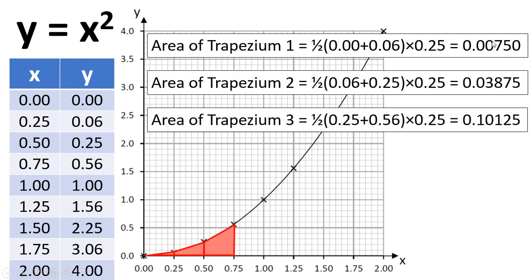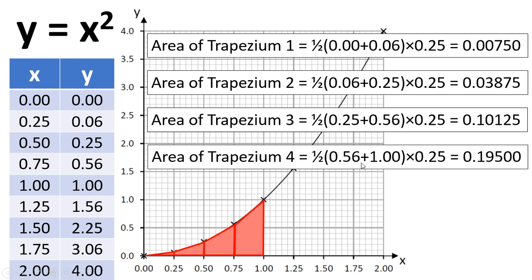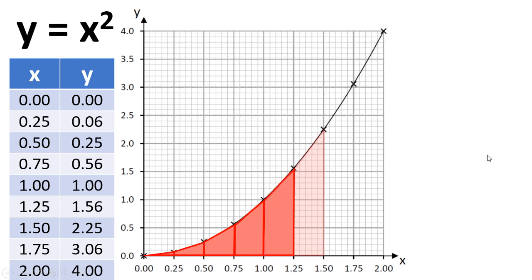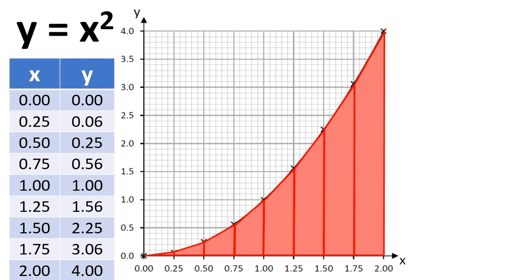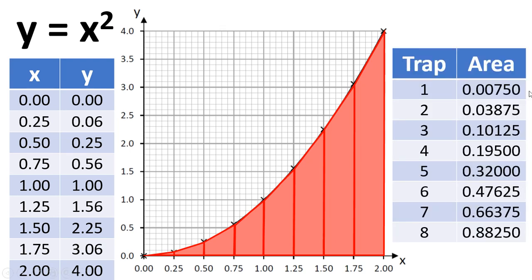We can do this for the second trapezium, the third trapezium, the fourth trapezium, each time taking the heights from this table here. So for example, trapezium for x equals 0.75, then we get the height as 0.56, because that's the value of y at this point, and then for x equals 1, the height equals 1. So we can put those numbers into here and work out the area of that trapezium. Now we can continue to do this for all of the remaining trapeziums, and we can then work out the area for each. So for all these different trapeziums, we've got 8 trapeziums, 1 to 8, and then we can work out an area for each.